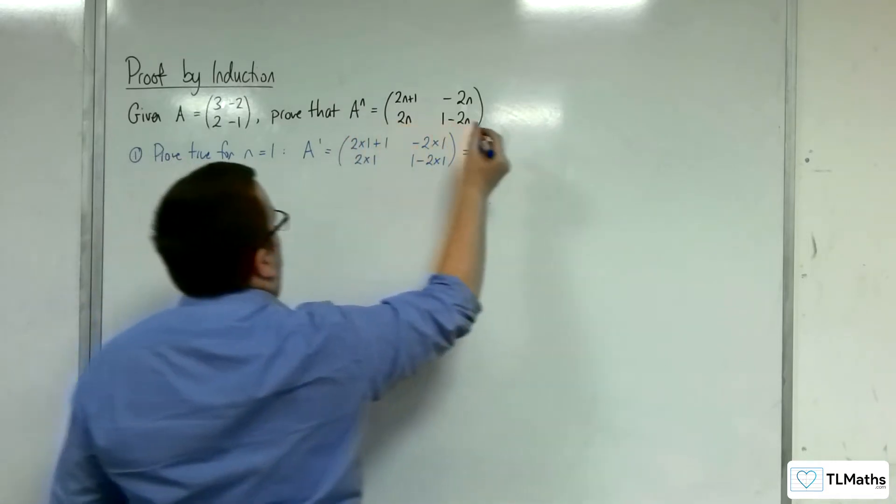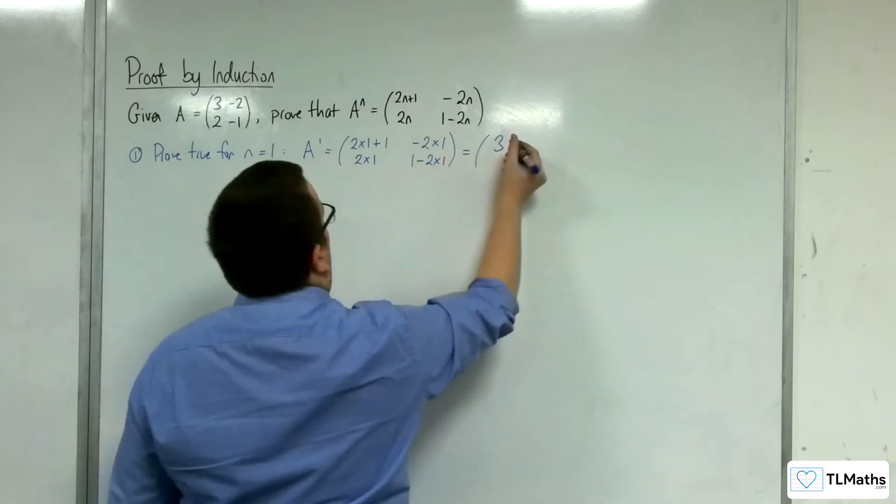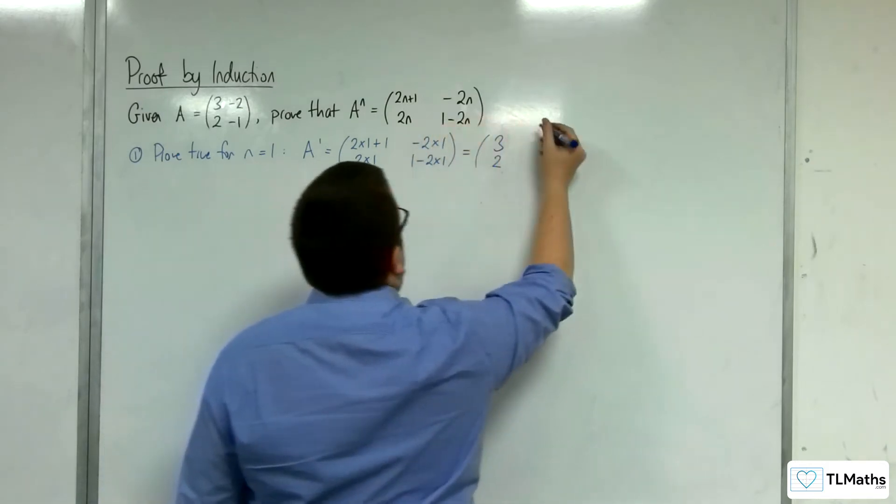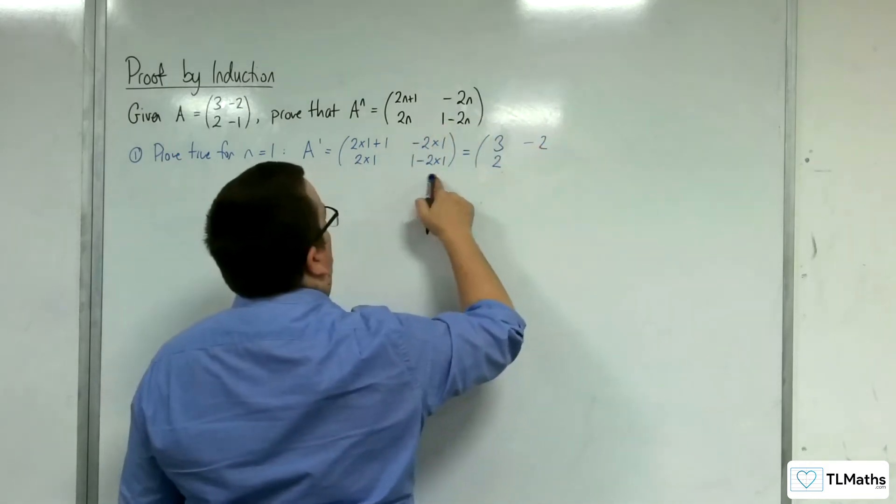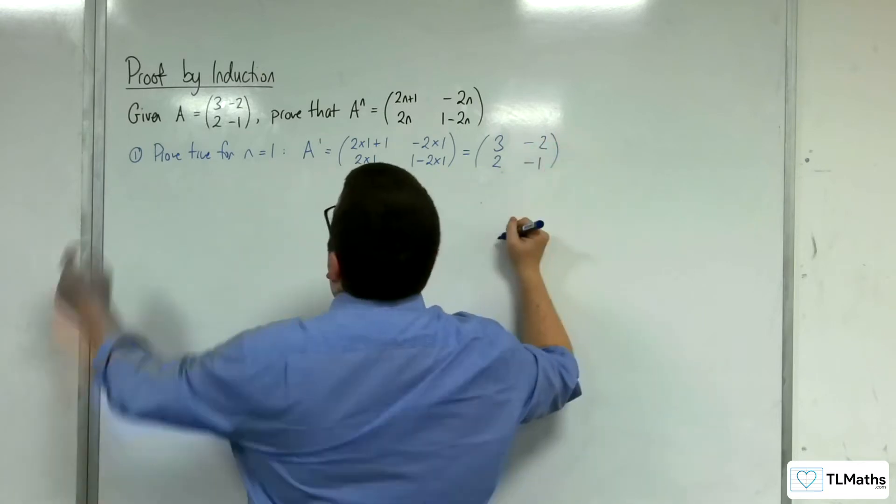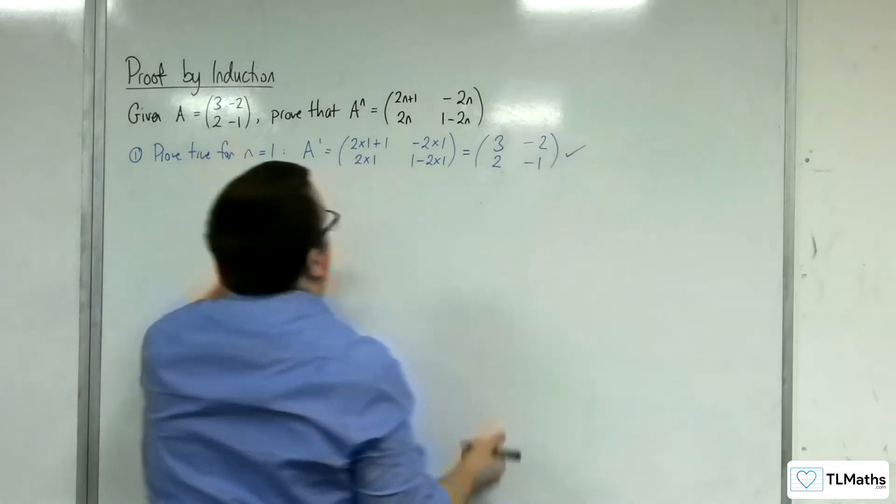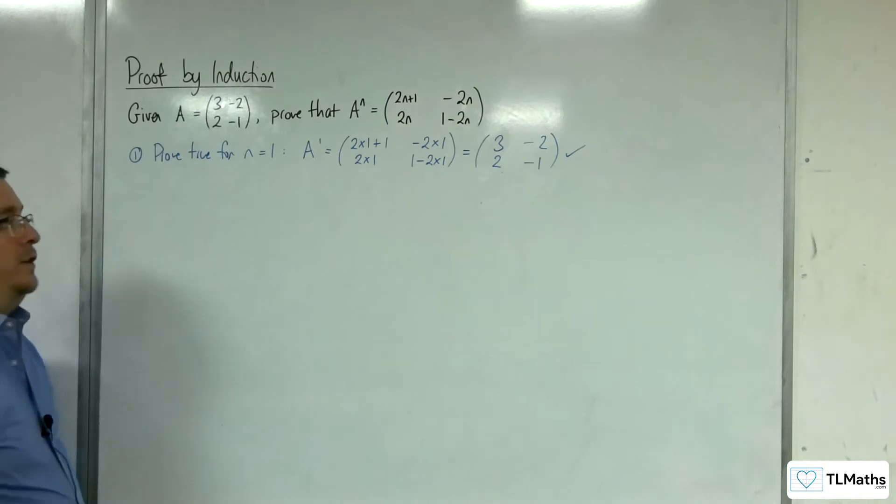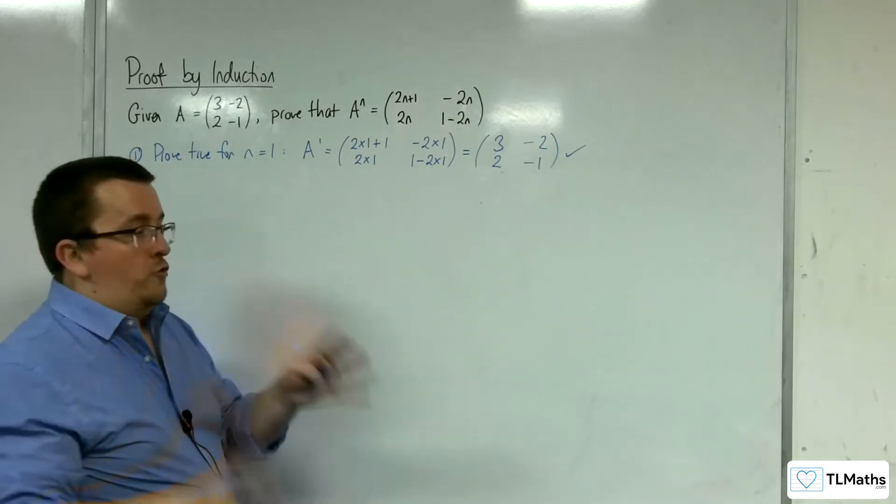So we get 2+1, so 3, 2 lots of 1 is 2, minus 2 there, and 1 take away 2, so negative 1. And that matches up with our matrix A. So that's all well and good, we've proved it's true for n equals 1.